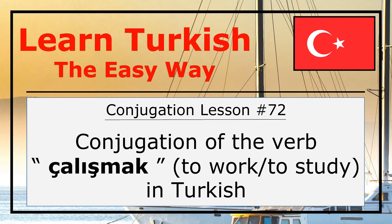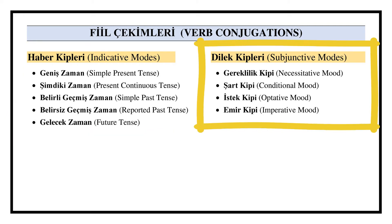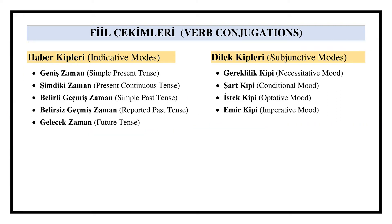Hi everyone! In this lesson, we will cover conjugation of the verb çalışmak in Turkish language. Just before we start conjugation, let's recall that Turkish verbs are conjugated based on nine different modes. Five of these modes are tenses and four of them are moods. This video covers all nine modes of conjugation, including affirmative, negative, interrogative and negative interrogative forms of the verb for each conjugation mode. So let's start!